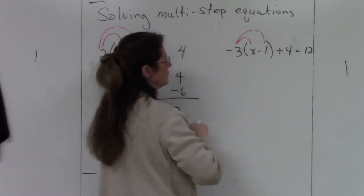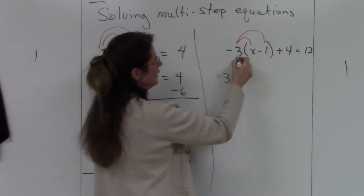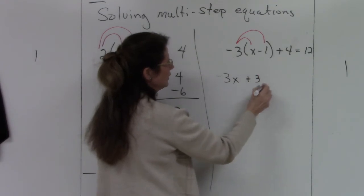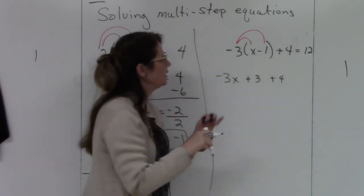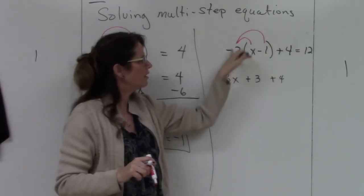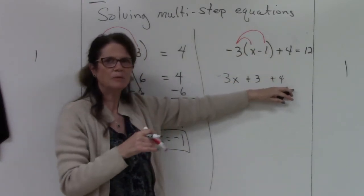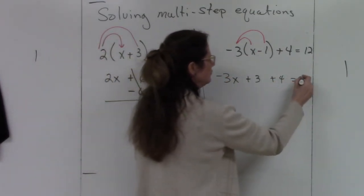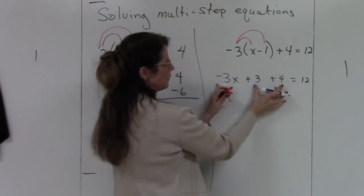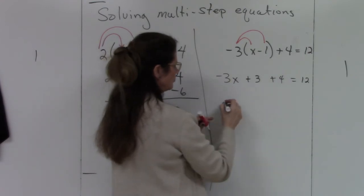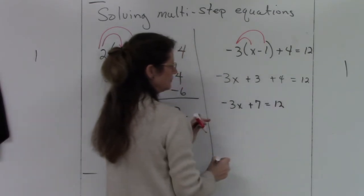I'm going to distribute: negative 3 times x is negative 3x, and negative 3 times negative 1 is positive 3. The plus 4 outside the parentheses is not multiplied by negative 3 — it's just an added bonus. That equals 12. Now cleaning up like terms: 3 plus 4 gives me negative 3x plus 7 equals 12.